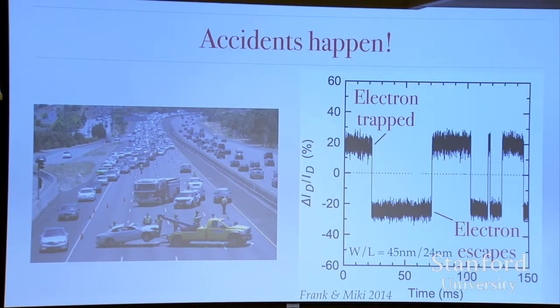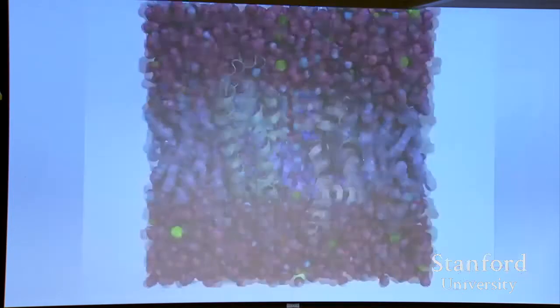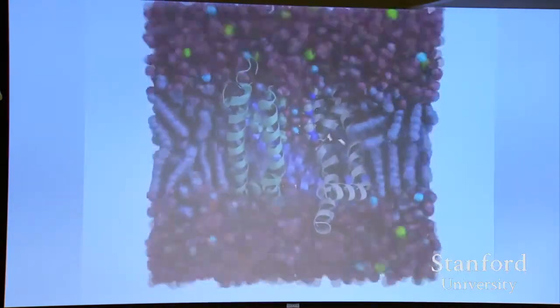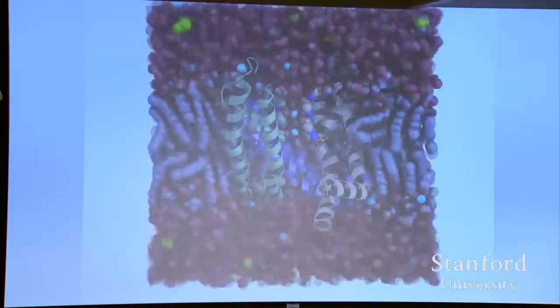It turns out our brains are working with ultimately scaled devices — ion channels — that pass a single lane of ions. They deal with this problem in spades.